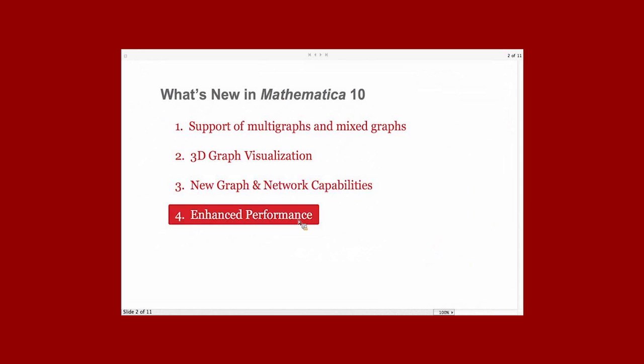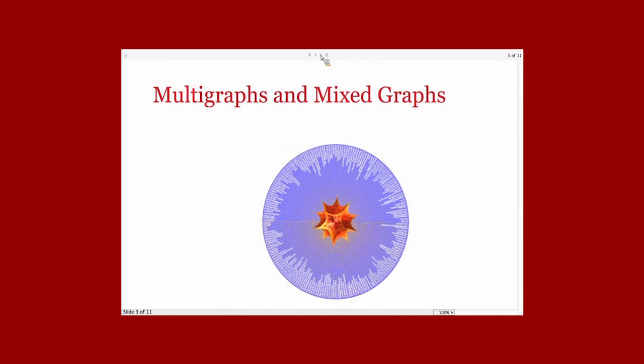Let's start to look at what we did for multigraph and mixed graph. A multigraph is a graph where you have multiple edges, and a mixed graph is a graph where you have both directed and undirected edges.